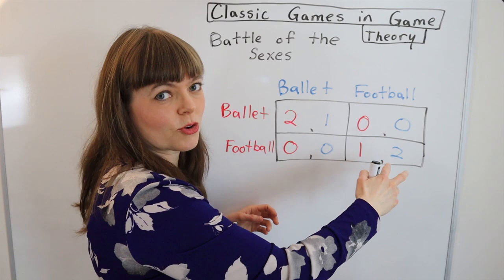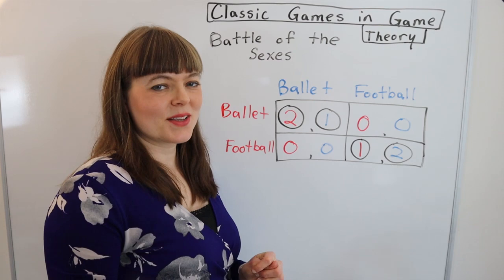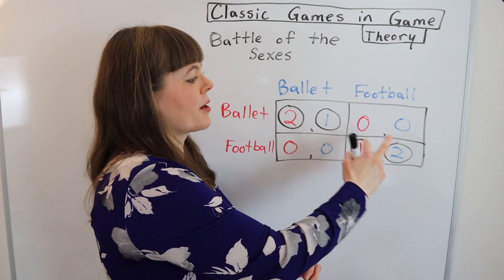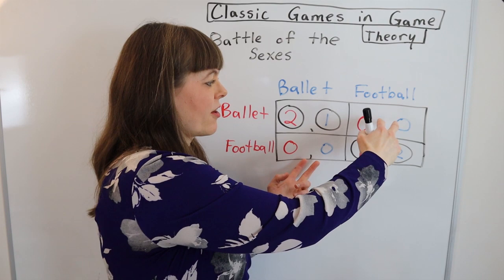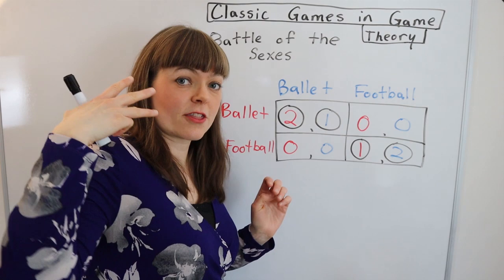Now let's solve for Nash equilibrium. We can see that we have two Nash equilibria, but one person prefers one equilibrium and the other person prefers the other equilibrium, and the off-equilibrium scenarios are worse for both players than either Nash equilibrium.